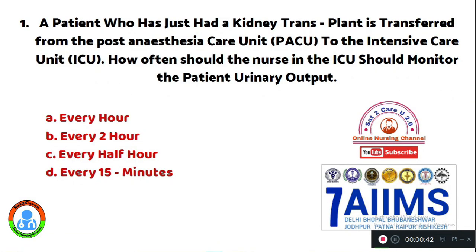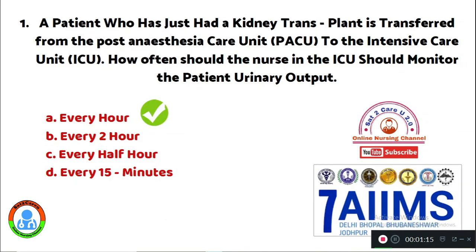Question 1: A patient who has just had a kidney transplant is transferred from the post-anesthesia care unit (PACU) to the intensive care unit (ICU). How often should the nurse in the ICU monitor the patient's urinary output? Option A: every hour. Option B: every 2 hours. Option C: every half an hour. Option D: every 15 minutes. The nurse in the ICU should record the patient's urinary output every hour. Option A is right.